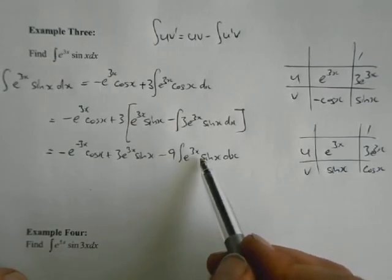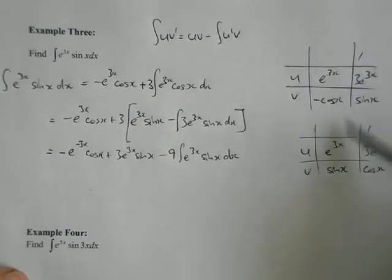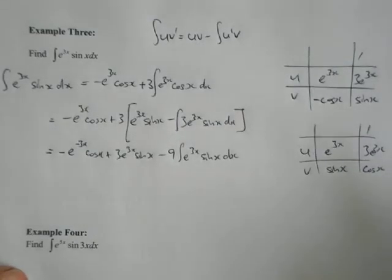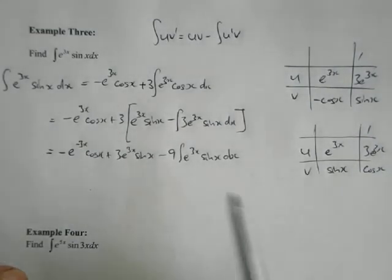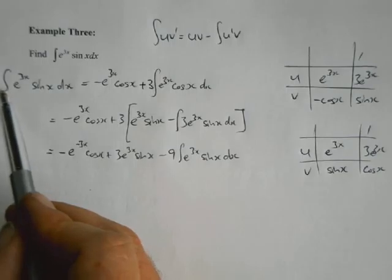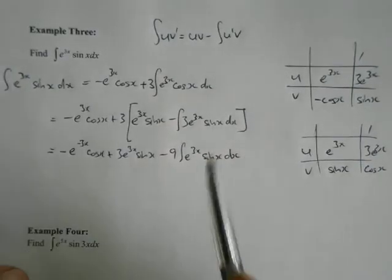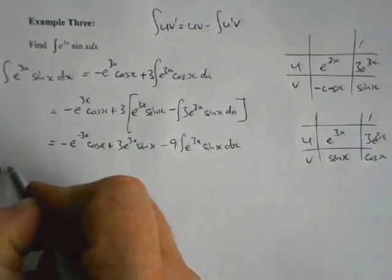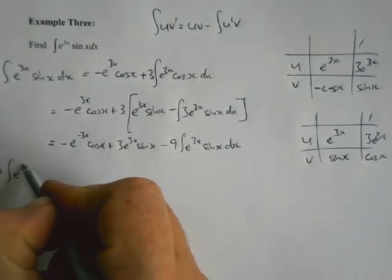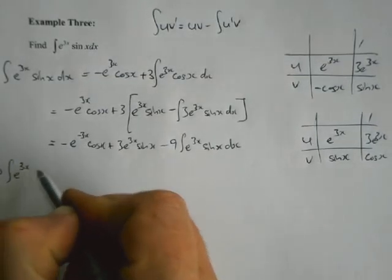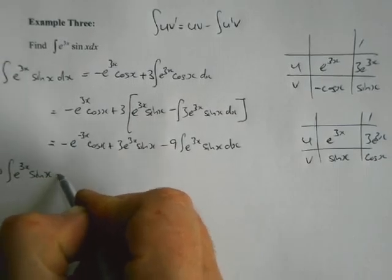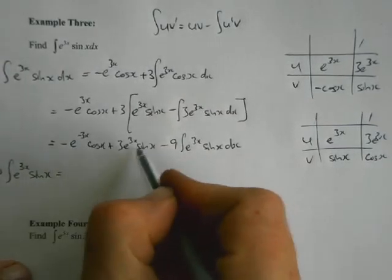So what we've got is negative e to the 3x cos x plus 3e to the 3x sine x, minus nine lots of the integral of e to the 3x sine x dx.